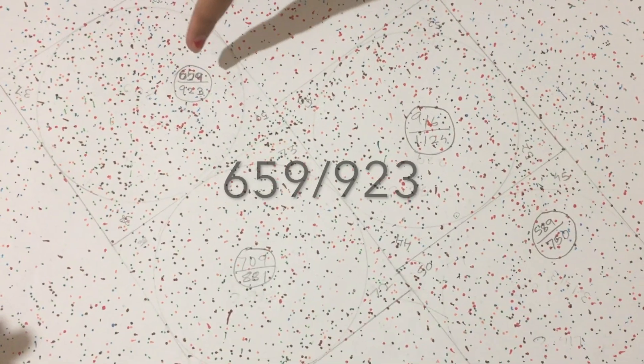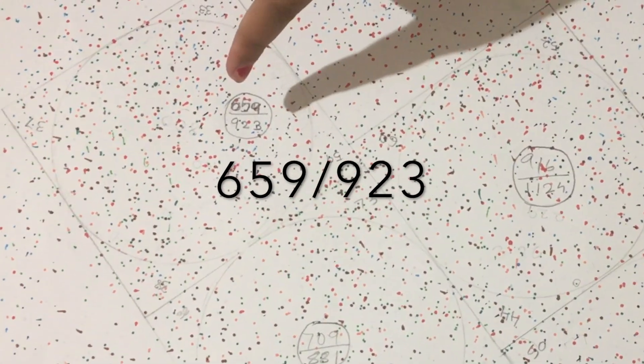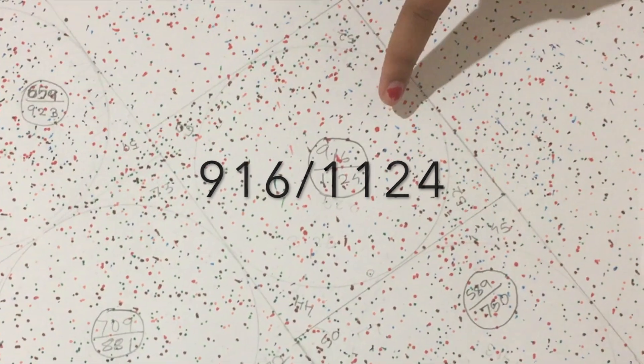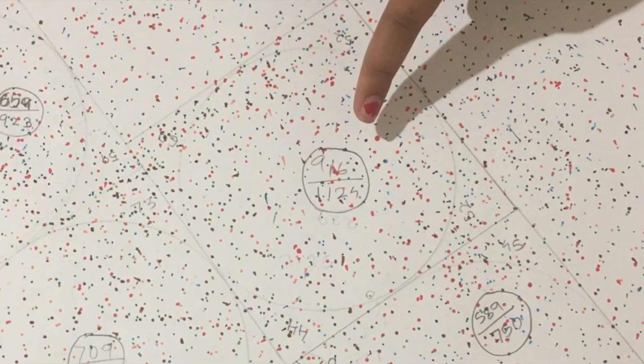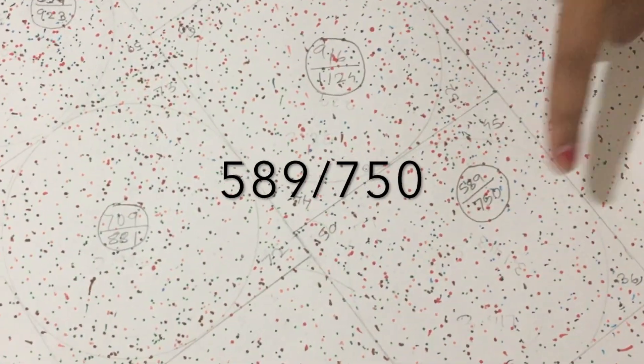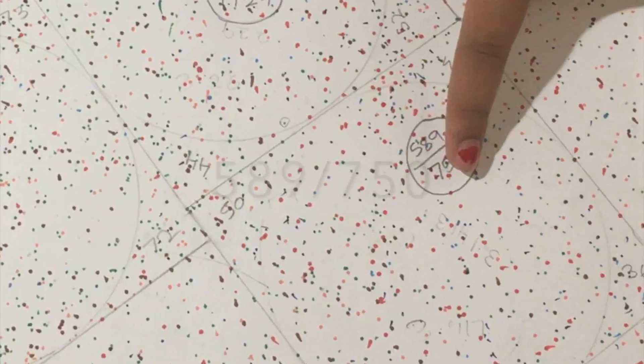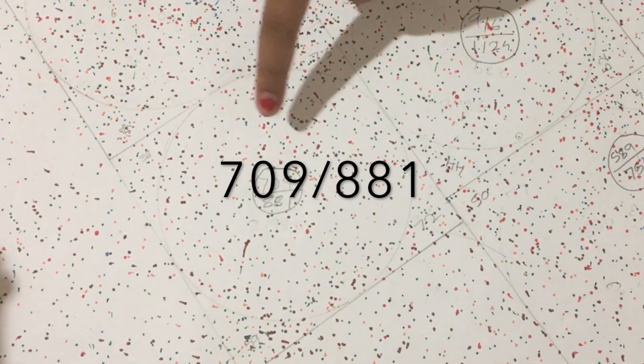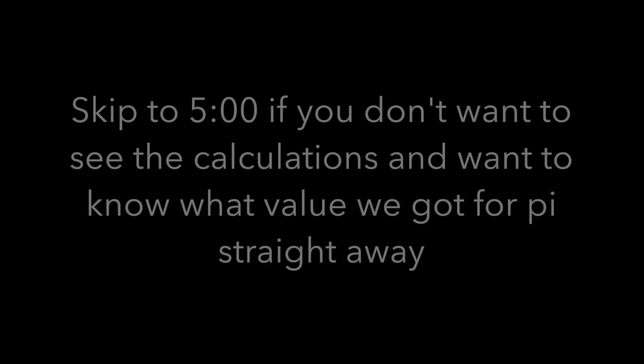Now count the dots in the circle and the squares. These are the results we got: the first square has 923 dots and the circle has 659 dots. Similarly, the others have 916 and 1124 dots, followed by 589 and 750, and 709 and 881.